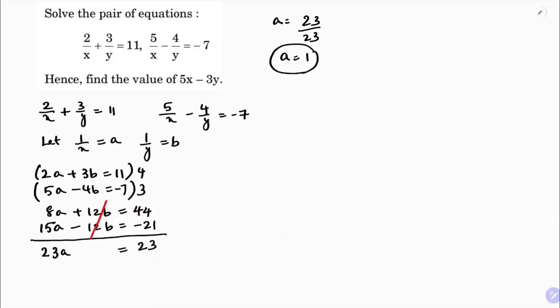The value of a is 1. Now substitute this in the first equation: 2a + 3b = 11. So 2(1) + 3b = 11, which gives 2 + 3b = 11. Therefore 3b = 11 - 2 = 9, and b = 9/3 = 3.